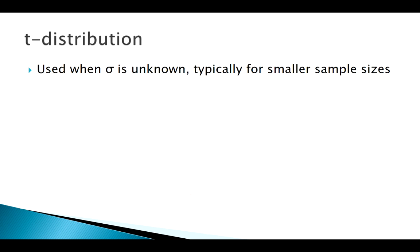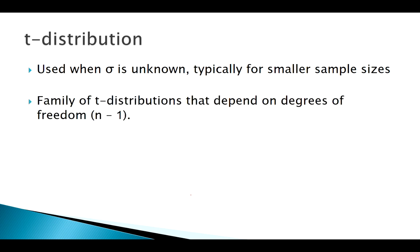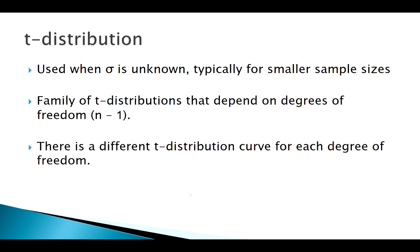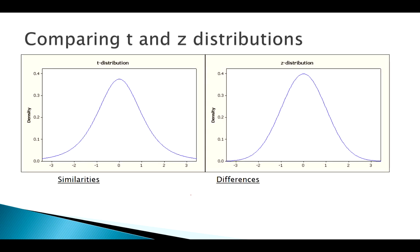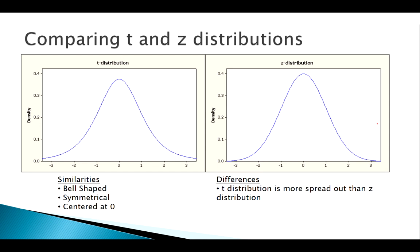We typically use T when we don't know Sigma and we have smaller sample sizes. The T distribution is actually a family of distributions that depends on n minus one — the degrees of freedom. Looking at T and Z side by side, they both appear to be unimodal bell-shaped curves, and both are symmetric around zero.